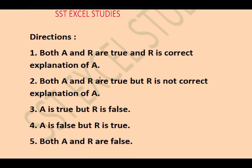First of all, the directions are discussed. The options are given in Assertion, Reason and Question and Answers. The first option is both A and R are true and R is the correct explanation of A — where A stands for Assertion and R stands for Reason. The next option is both A and R are true but R is not the correct explanation of A. Next is A is true but R is false. Next is A is false but R is true. Next is both A and R are false. There are 5 options and we have to select the right option according to the statements.